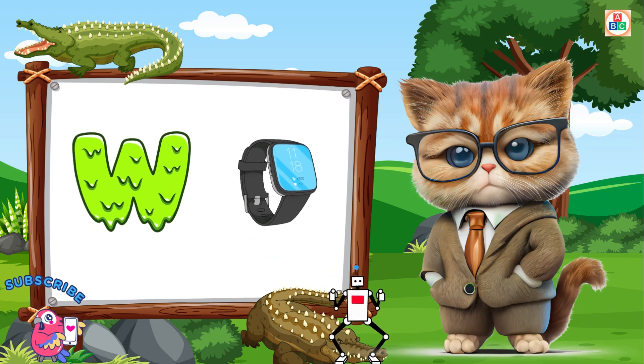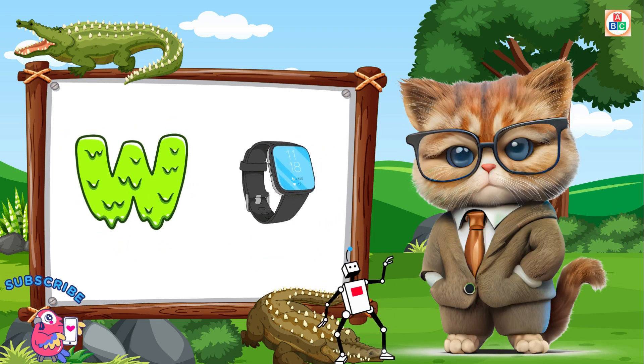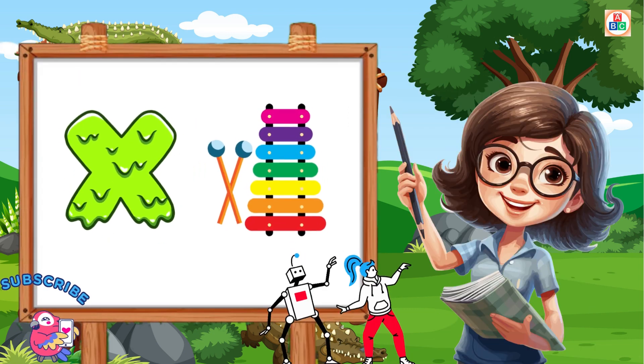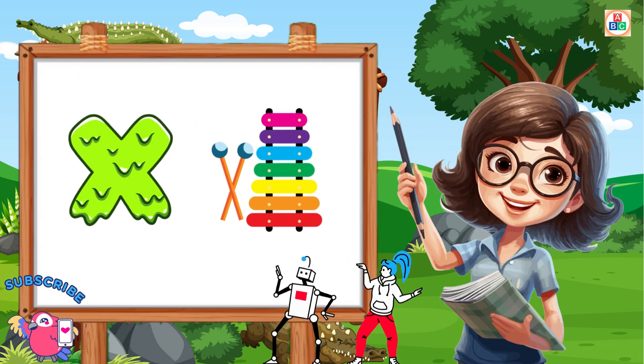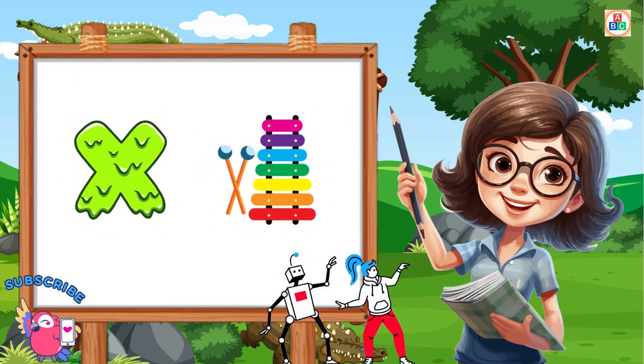W is for watch, w-w-watch. X is for xylophone, z-z-xylophone.